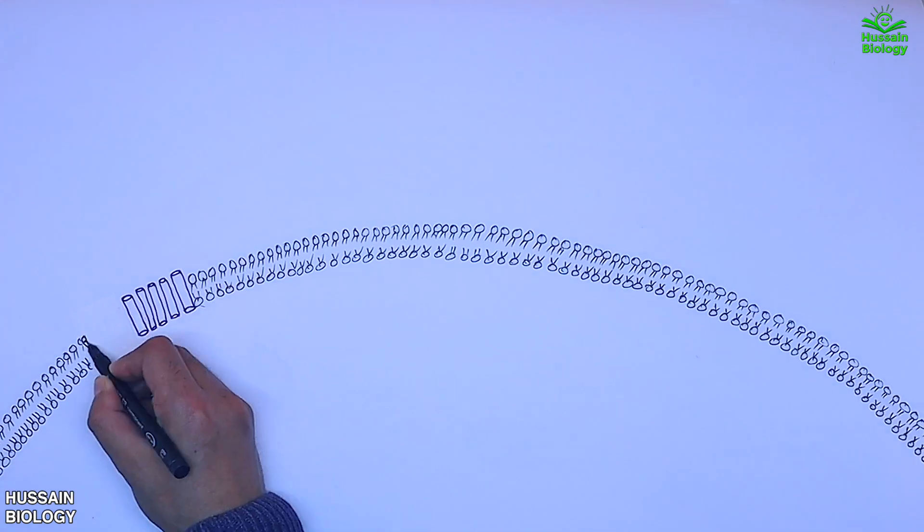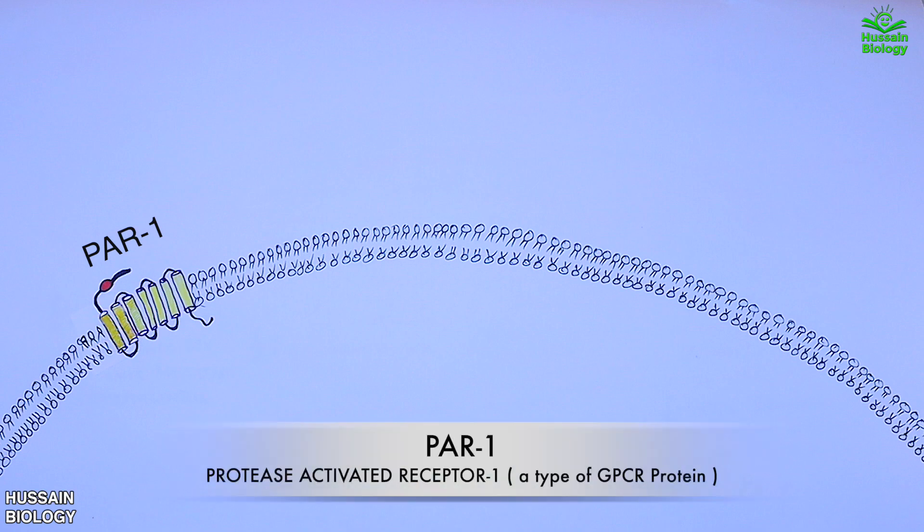Here in this platelet cell membrane we have the protease activated receptor, aka PAR1 protein. It's a form of GPCR protein, but this receptor gets activated only when ligand cleaves off the N-terminal extracellular part of receptor, that we are going to see later in this video. Then on the right we have the RAP1 protein having GDP bound.